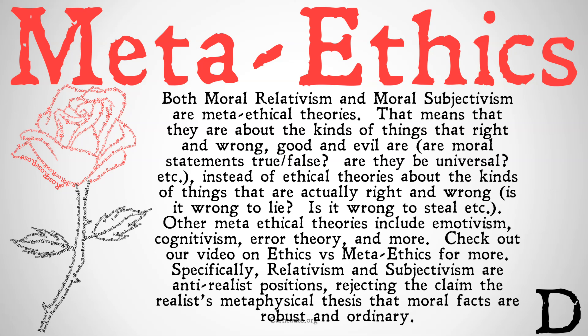Ethical theories ask questions like: is it wrong to lie? Is it wrong to steal? Whereas meta-ethical theories ask: what kinds of things are statements such as 'it's wrong to lie'? Are they statements expressing opinions? Are they statements expressing feelings? Other meta-ethical theories include emotivism, cognitivism, error theory, and more.